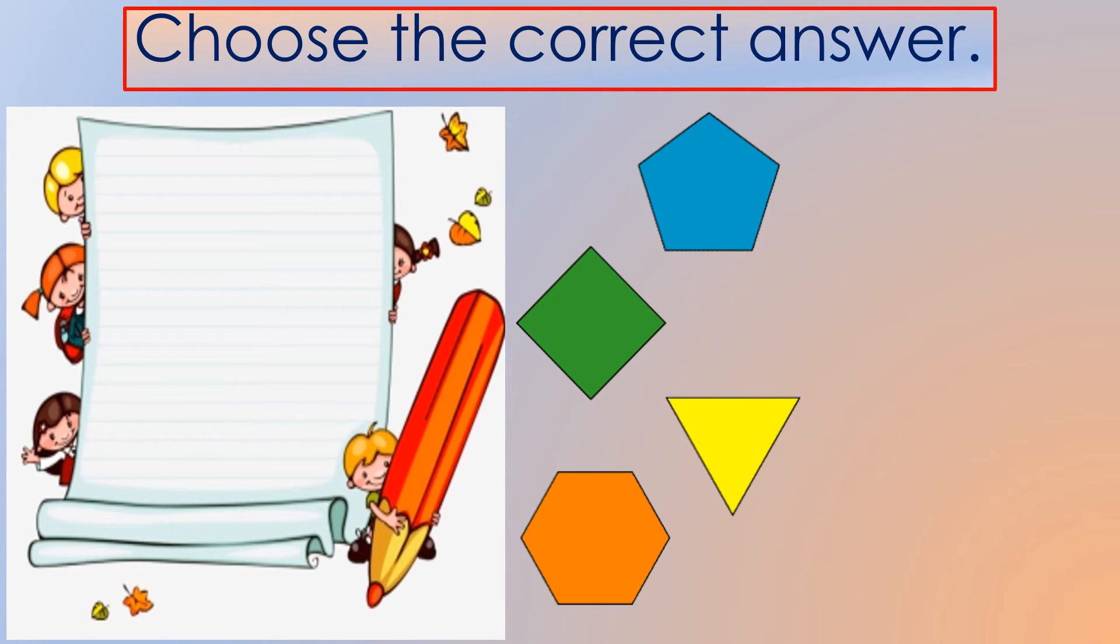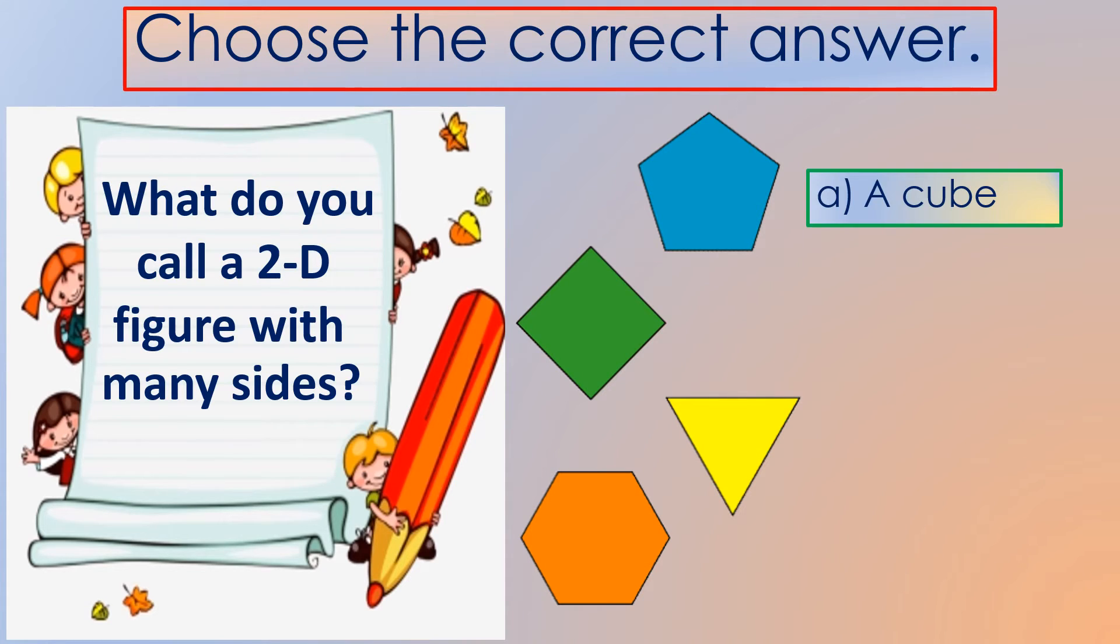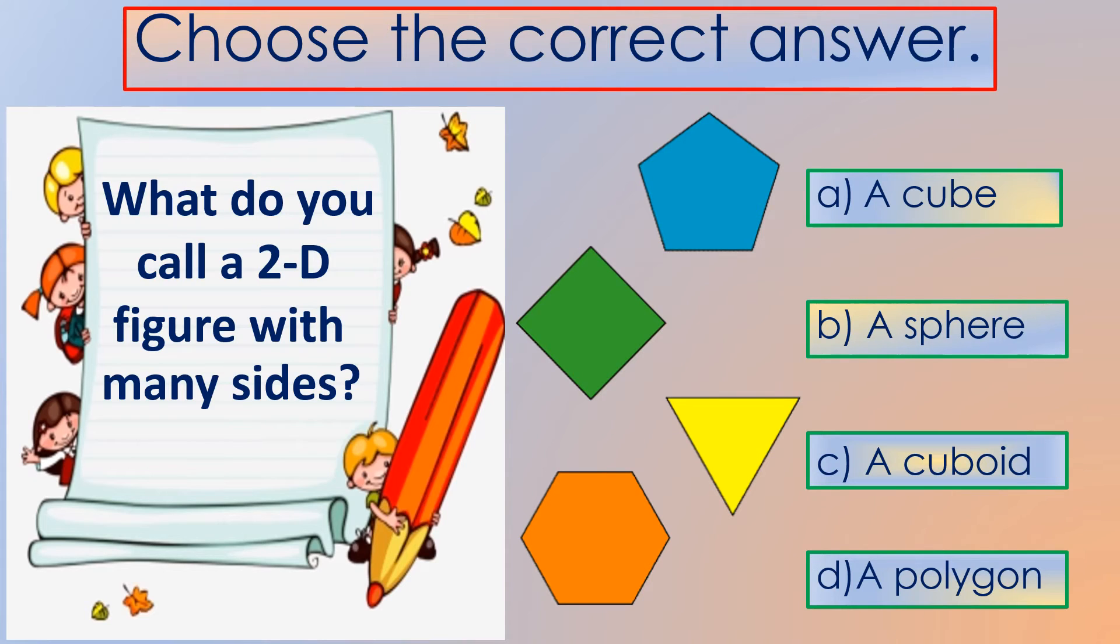Let's check how well you can remember information about this lesson. So choose the correct answer. Here is the question: What do you call a two-dimensional figure with many sides? Is it A, a cube? B, a sphere? C, a cuboid? Or D, a polygon? For the correct answer, it is letter D, a polygon.